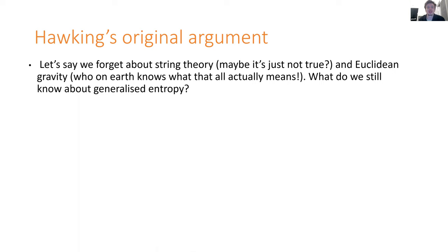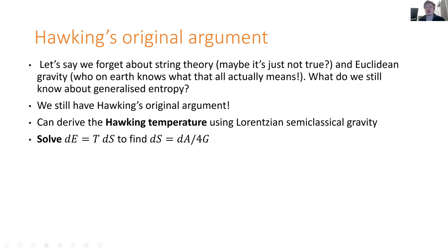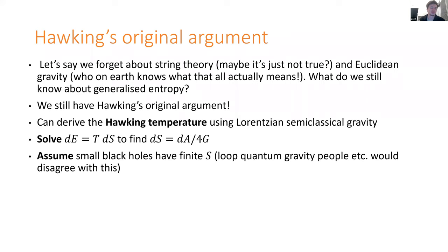What do we know about generalized entropy in the context of Lorentzian semi-classical gravity? We have Hawking's original argument where he derived the Hawking temperature of a black hole — not the entropy, but the temperature — just using Lorentzian semi-classical physics. You do QFT in a fixed curved spacetime with gravity frozen out and you see radiation comes out at some temperature. We have energy as a function of temperature, we solve for dE equals T dS, and we find after a little bit of work that dS equals dA over 4G. Then, assuming a sufficiently small black hole has some finite entropy with no infinite number of remnant states, we can integrate this up from horizon area zero, and for large black holes we just have S equals A over 4G.